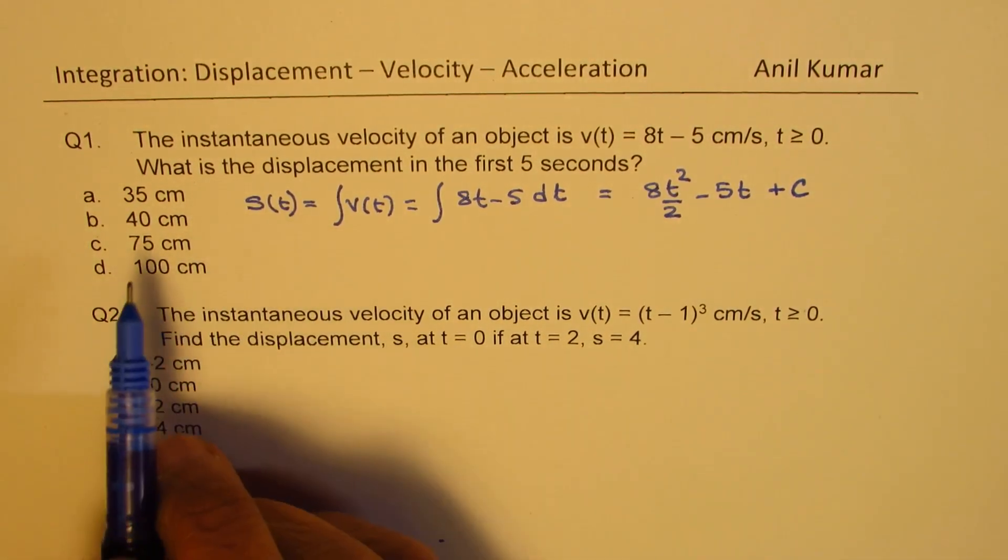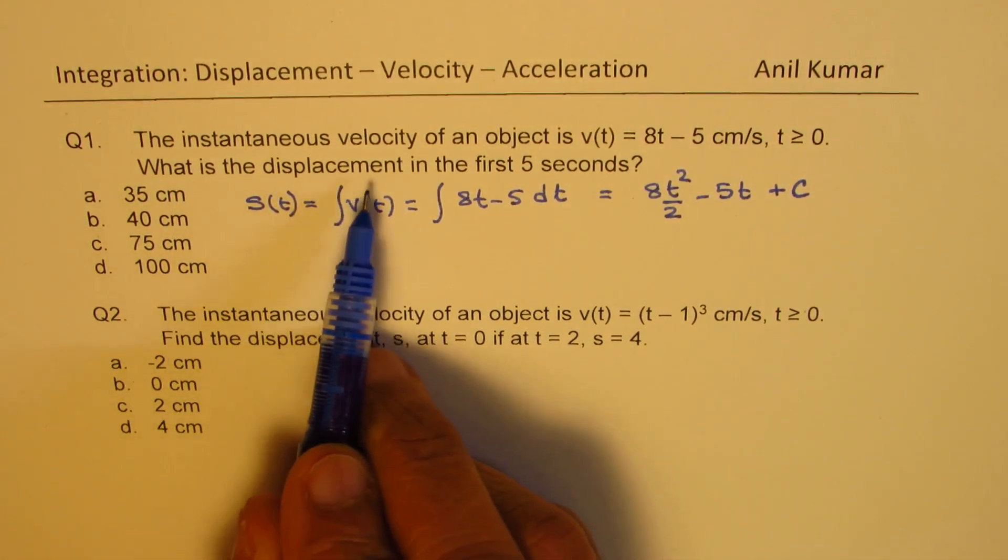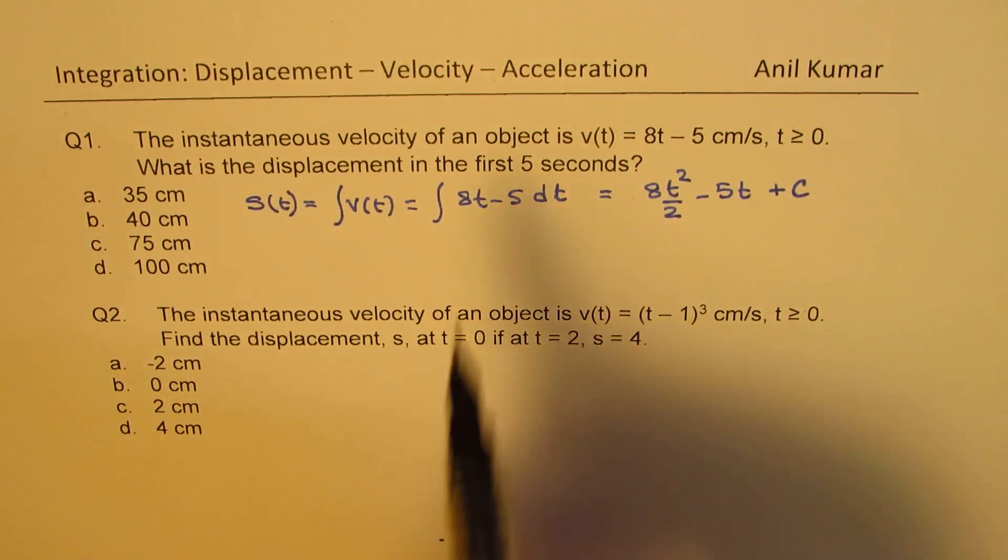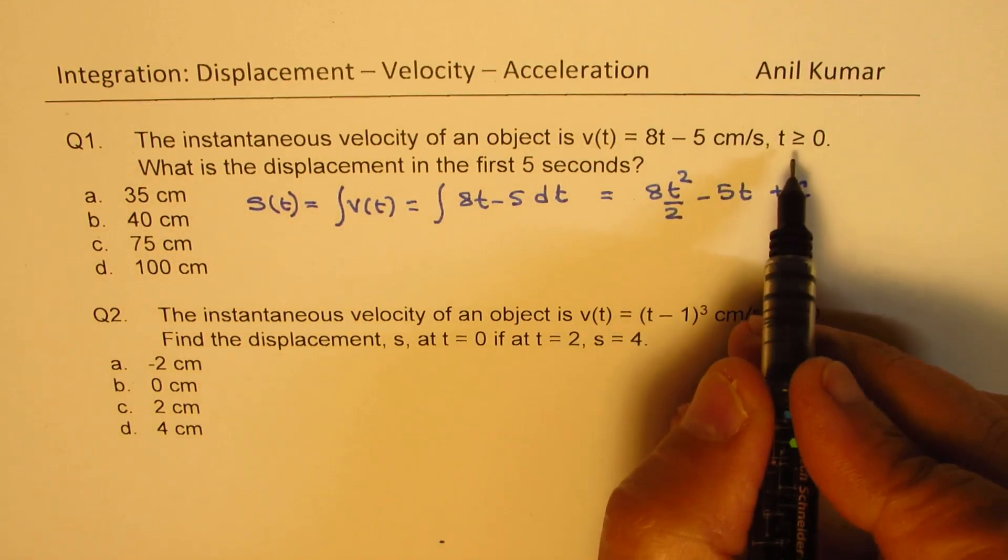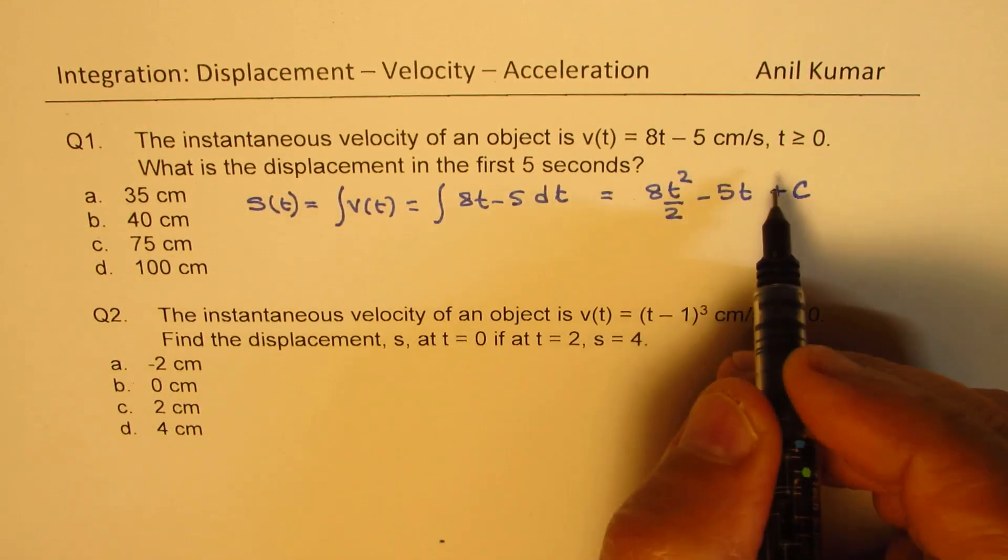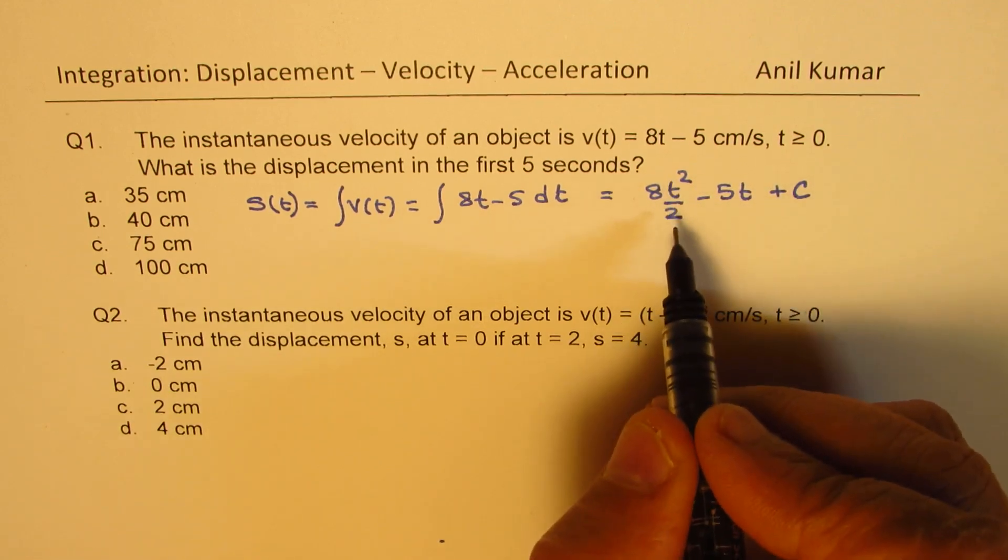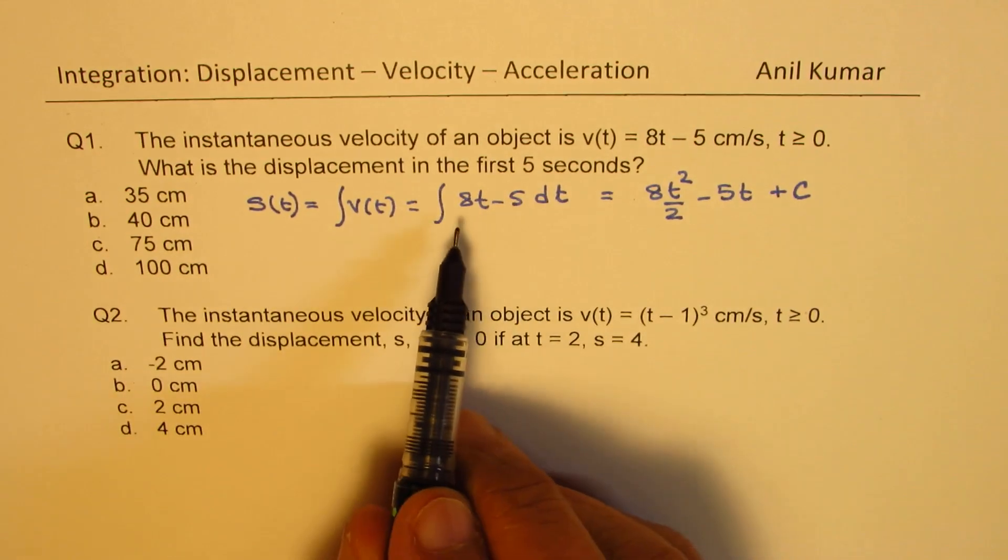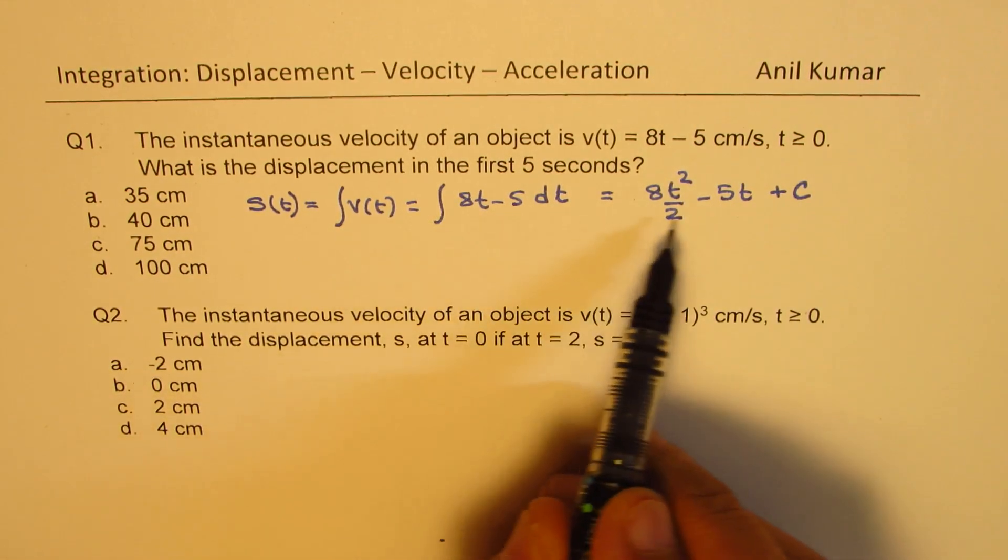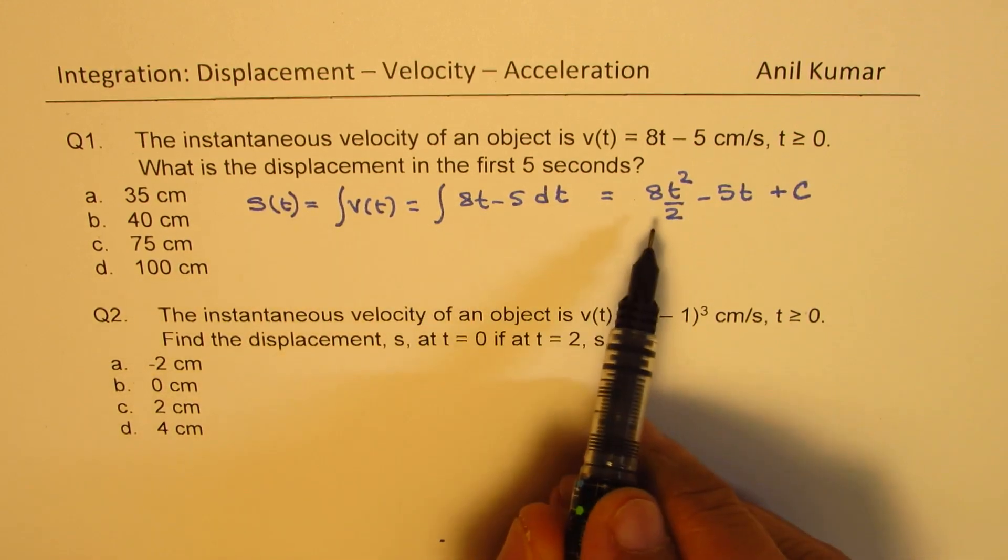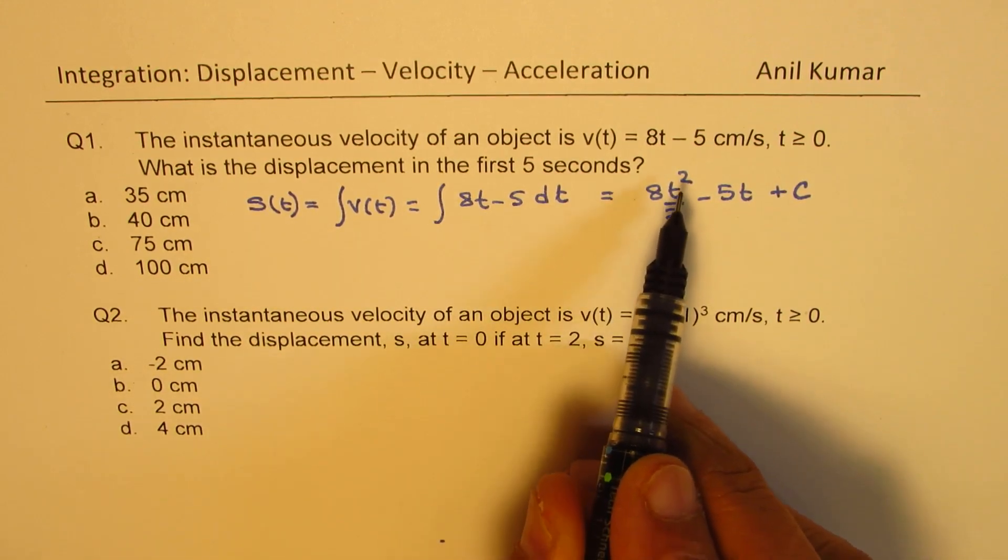Now we need to find the displacement in the first 5 seconds. Now when we say 5, first 5 seconds and we are saying t is greater than equal to 0, that means we want this displacement from 0 to 5. So one thing is important to understand here that this graph of displacement is a parabola.